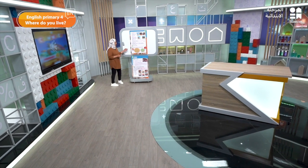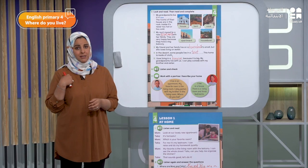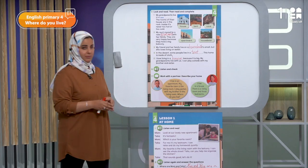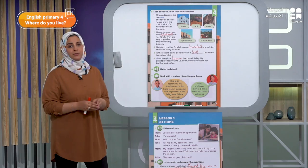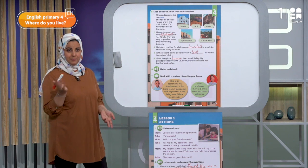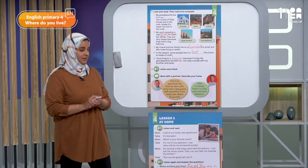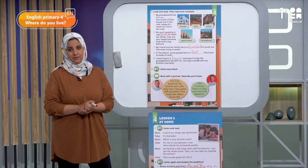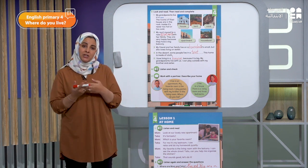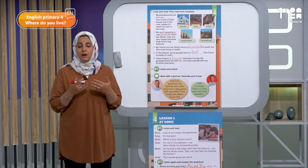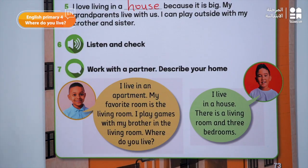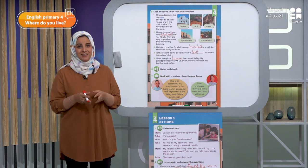Now let's move to exercise number seven. I will read the speech bubble aloud while you follow and listen. I live in an apartment — my favorite room is the living room. I play games with my brother in the living room. Where do you live? I live in a house — there is a living room and three bedrooms. When I see a speech bubble, it means to discuss with my friend, to talk together. The discussion is very important because it improves our fluency — we can practice the language through discussion. So when I see questions with a speech bubble, it means to talk and discuss with your friend.